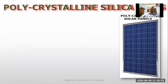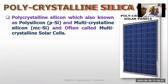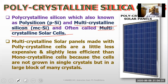Polycrystalline silica cell, also known as polysilicon or multicrystalline silica cell — these are the same names. Multicrystalline solar panels made with polycrystalline cells are a little less expensive and slightly less efficient than monocrystalline.